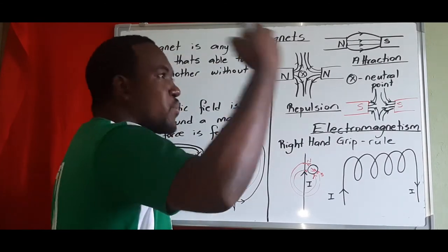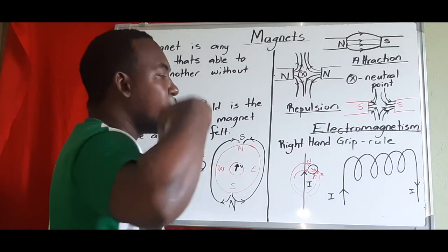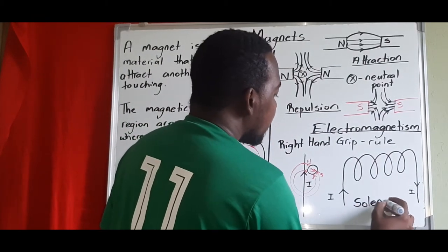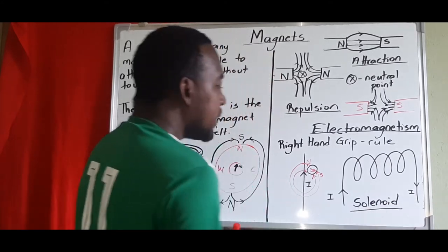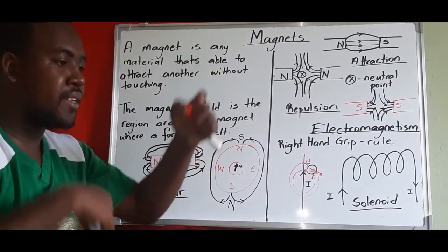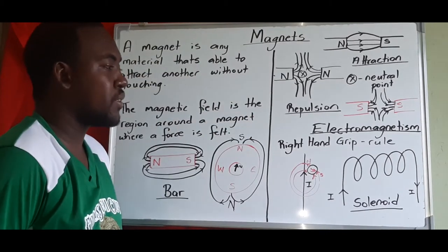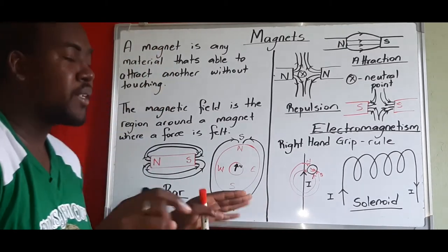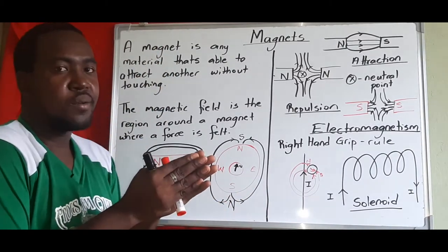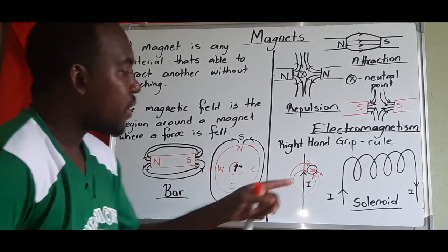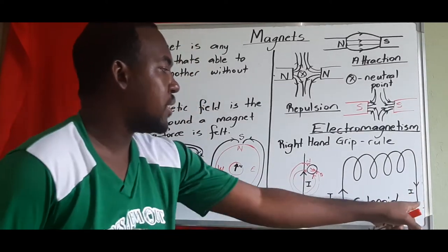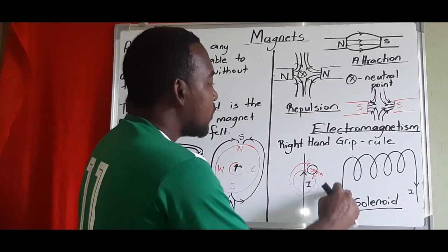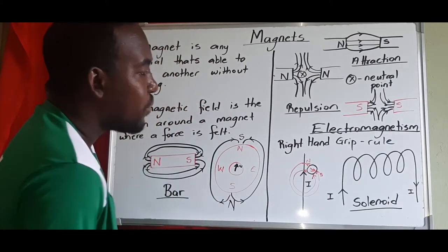Now let's look at a situation where the straight wire is wrapped around in a cylindrical motion to give more than one turn. This is called a solenoid — a long wire wrapped around to resemble a spring, with the wires very compact side by side. These connected wires are attached to a battery supply that allows current to flow.